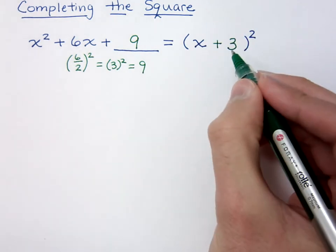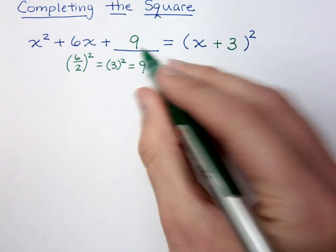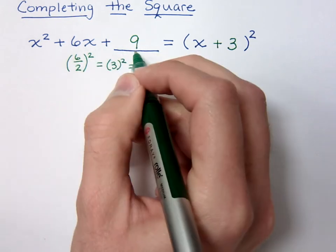Now, notice the cool connection that we have here with 3. 3 squared gives you 9, and 3 times 2 gives you 6. So it's connected to both of these numbers right here.